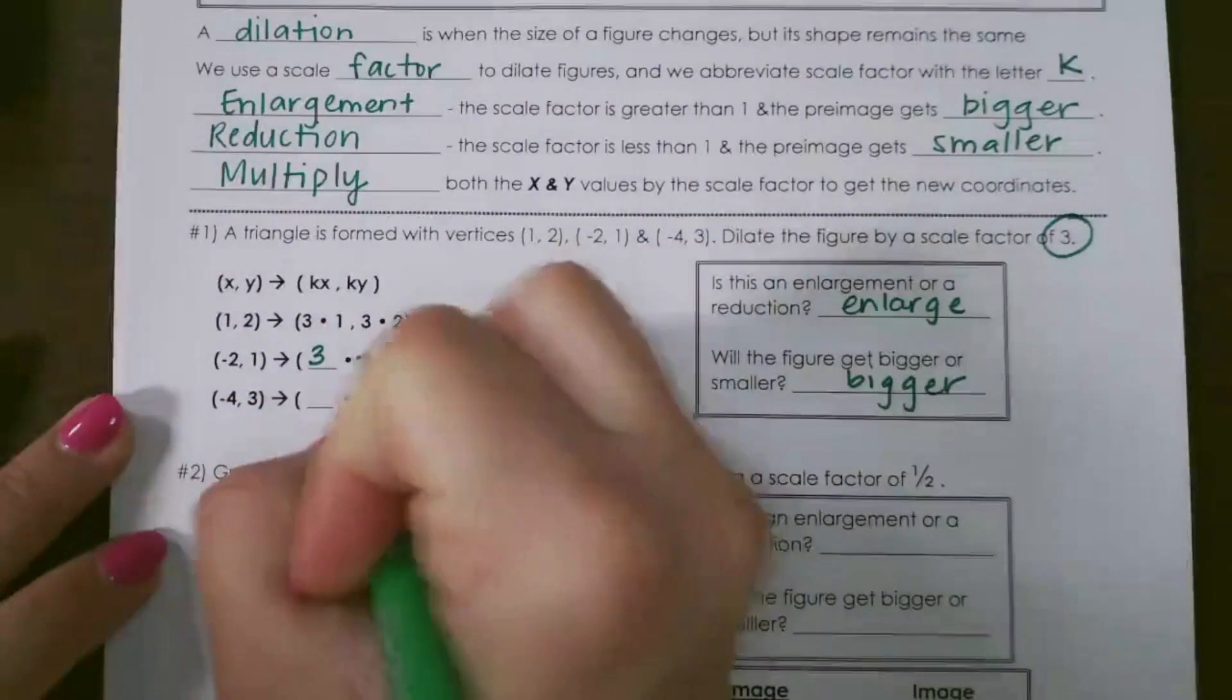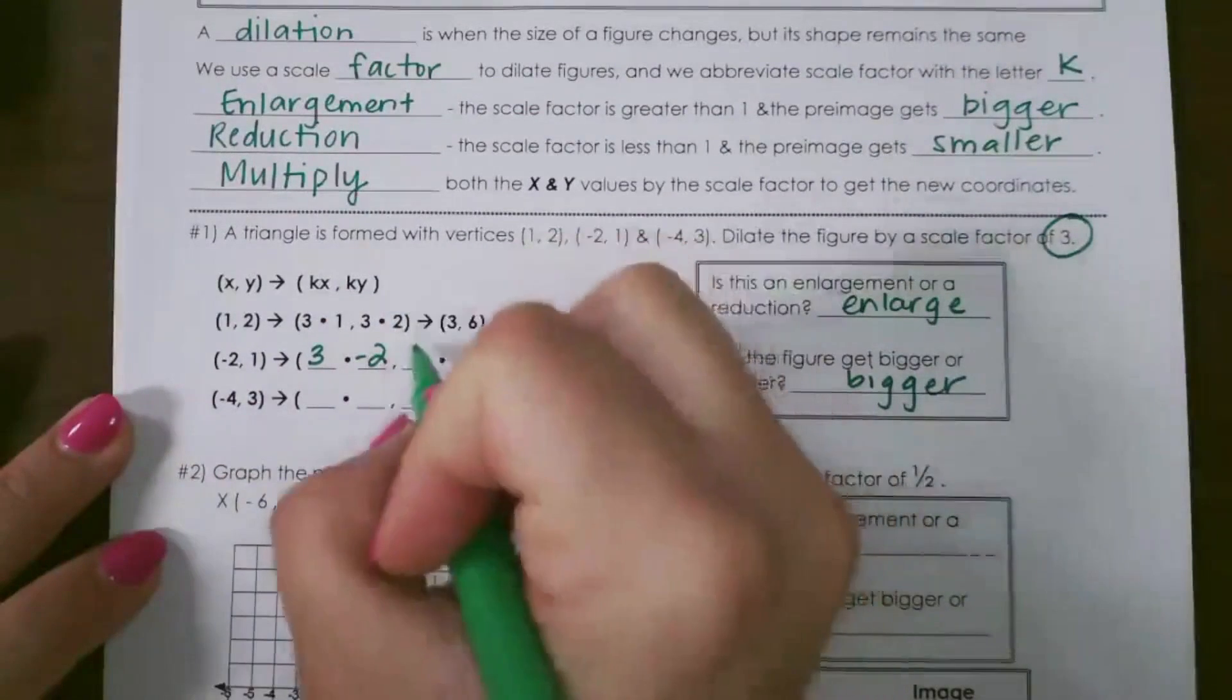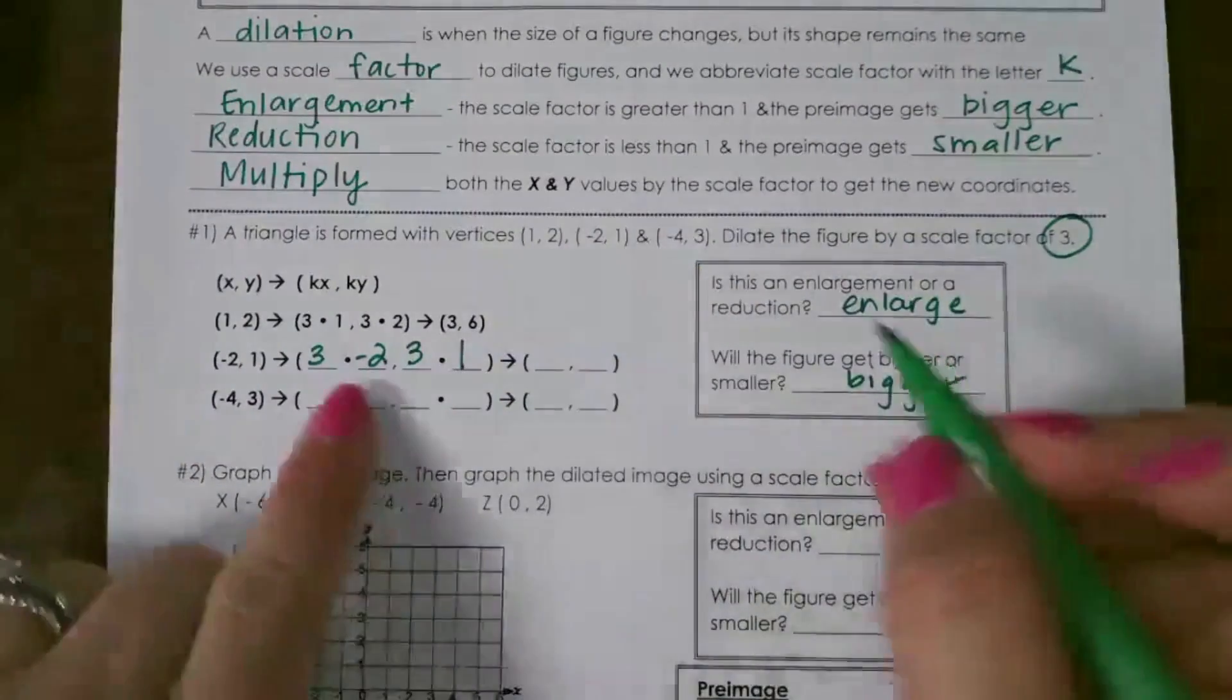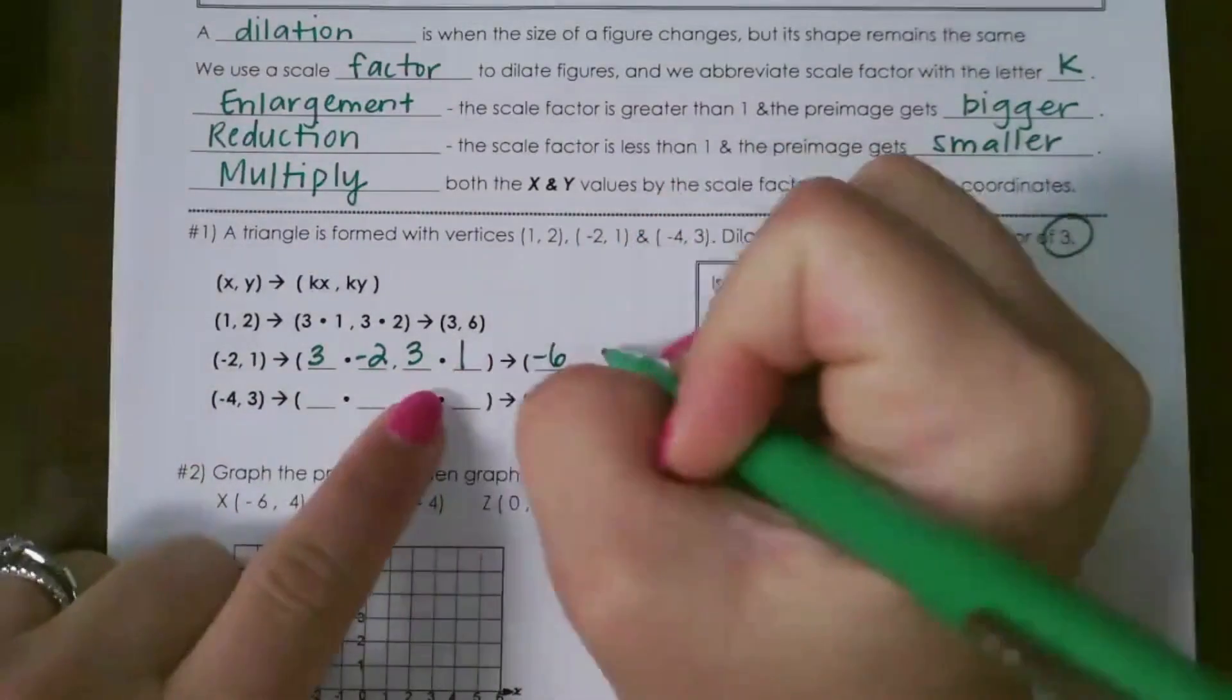So here, I'm going to multiply x by 3, and then y by 3. So my new ordered pair is (-6, 3).